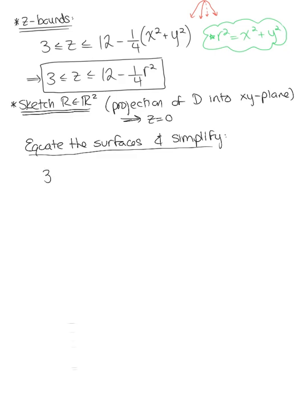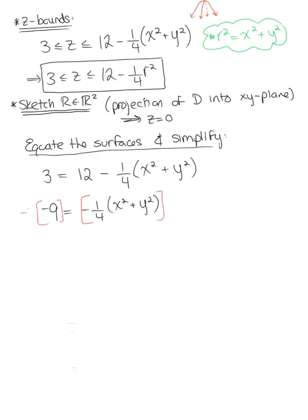Setting 3 equal to 12 minus one-fourth times x squared plus y squared, we subtract 12 from both sides to get negative 9 equals negative one-fourth times x squared plus y squared. Multiplying both sides by negative 4, we get 36 equals x squared plus y squared, which we recognize as a circle centered at the origin with a radius of 6.